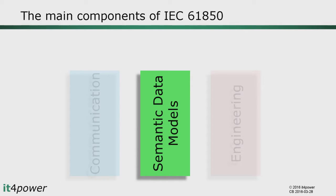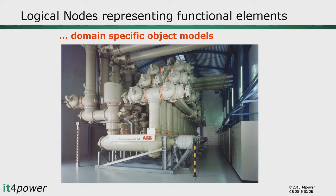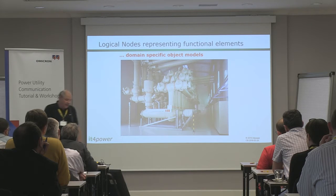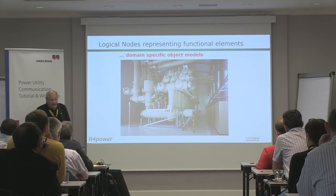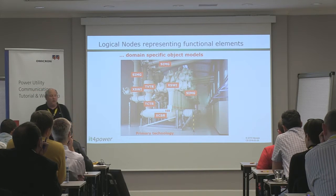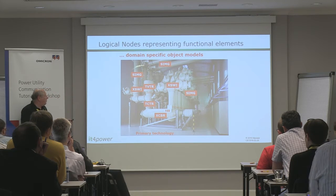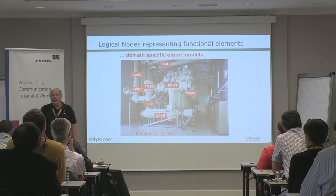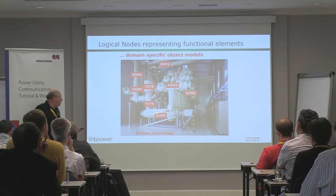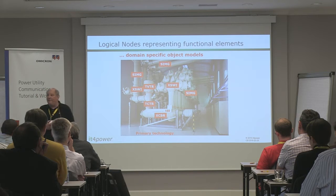Now let's look beyond communication at the data models. The main concept in 61850 is the logical node — a grouping of information representing functional elements. For example, in a switchgear context, 61850 defines logical nodes such as XCBR for a circuit breaker, XSWI for other switches like disconnectors or earthing switches, voltage and current transformers, and even gas density measurement units for gas-insulated switchgear. Everything you can get as information from a circuit breaker is grouped together in the XCBR logical node.